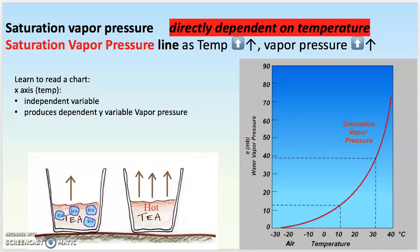When we talked about saturation vapor pressure, we talked about a specific subset of actual vapor pressure — the vapor pressure that comes to equilibrium on the surface of water. That equilibrium is the number of water molecules leaving as vapor equaling the number of vapor molecules returning to the water and condensing. This equilibrium pressure is going to be lower in cold waters and higher in hot waters.